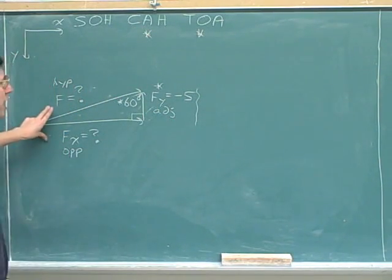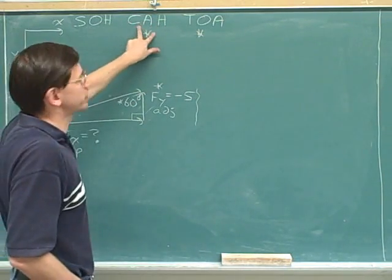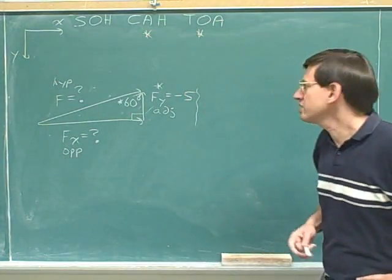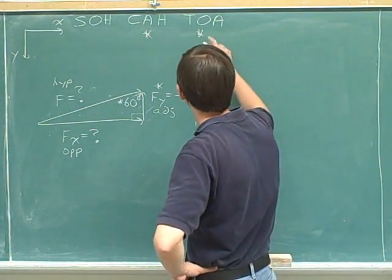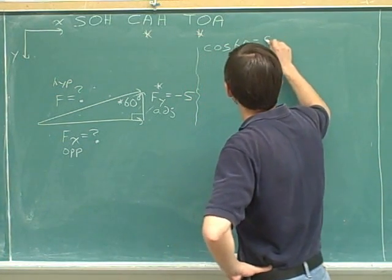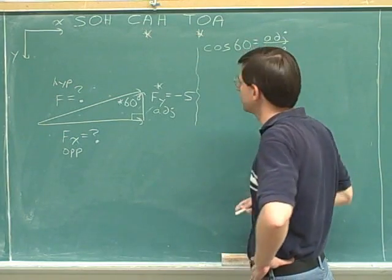Here we've been given this adjacent side, so these are the trig functions that make sense. Since we have to find two different sides, it's not surprising that we can use two different trig functions. We can start with whichever one we want, cosine or tangent, and I feel like starting with the cosine.